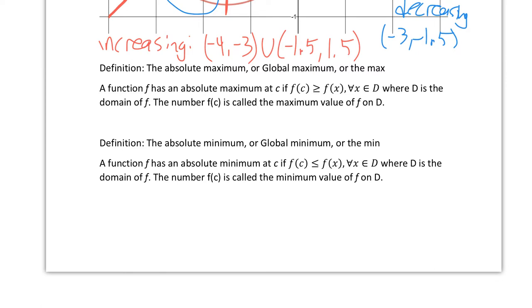Similarly, there's the absolute minimum — or global minimum, or just the min. Think of absolute zero in chemistry: −273°C or 0 Kelvin. The definition is the same as the absolute maximum but with the inequality flipped: f has an absolute minimum at c if f(c) ≤ f(x) for all x in the domain D. If you find the smallest y-value — smaller than all other y-values — that y-value is called the minimum value of f on D.